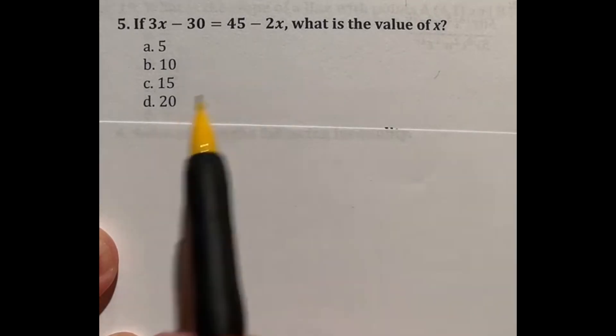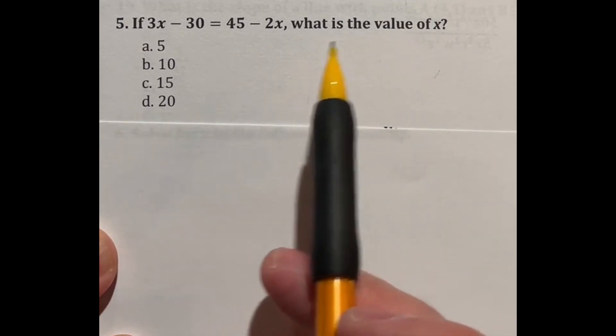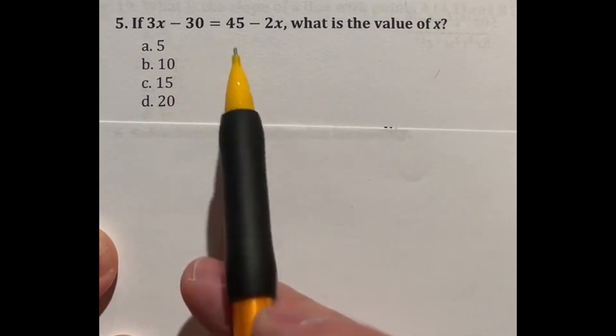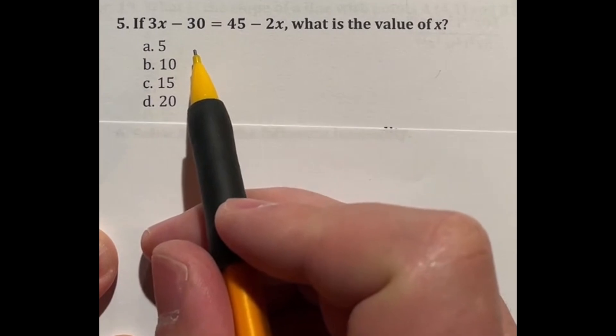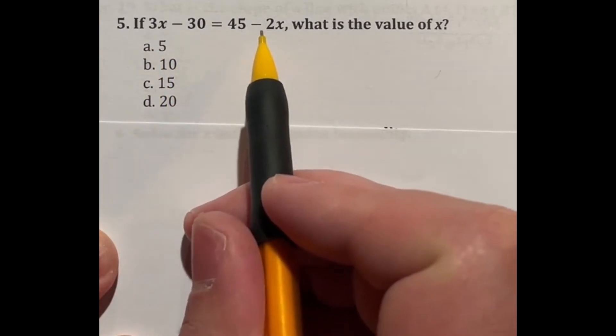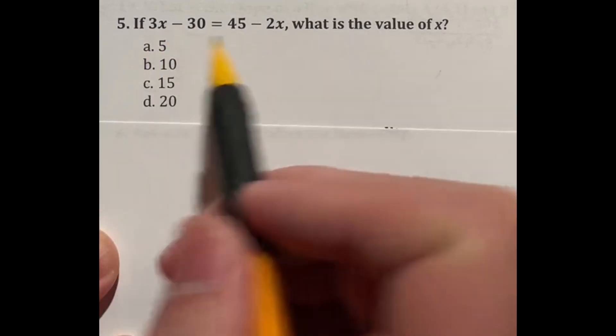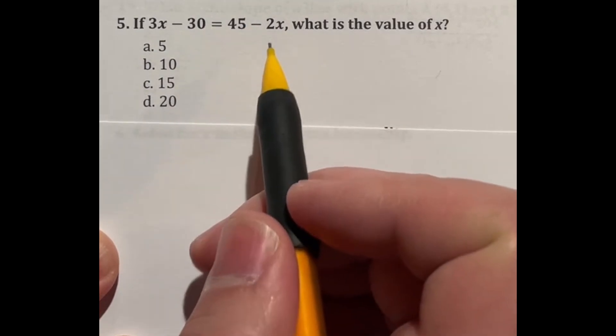If 3x - 30 is equal to 45 - 2x, what is the value of x? So this is solving a multi-step equation for algebra one. So we need to get x by itself. So a lot of this is just moving things to different sides. I like to always try to move all of my terms with an x to one side, and all of my terms without an x to the other side. So that's what I'm going to do.